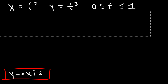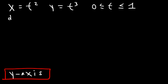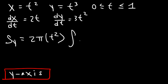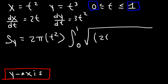So let's go ahead and find dx/dt and dy/dt. dx/dt is equal to 2t, and dy/dt is 3t². So S sub y is going to be 2π x. In this case, x is t squared, times the integral from 0 to 1. Then (dx/dt)² is (2t)² and (dy/dt)² is (3t²)².